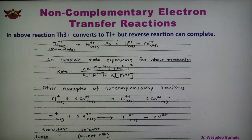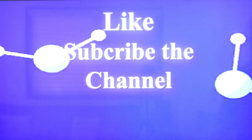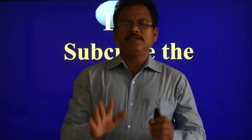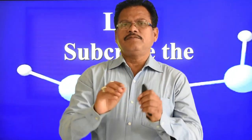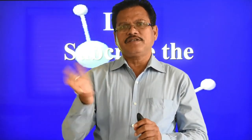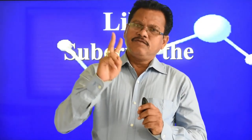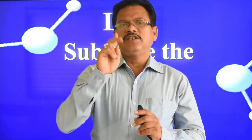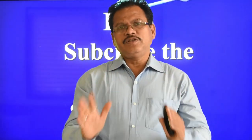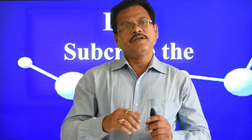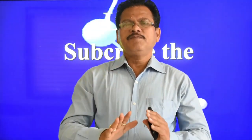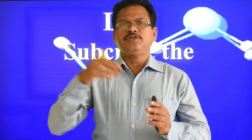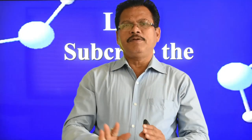In summary, we have seen the outer sphere reaction and five factors affecting it. We have also seen the two types of two-electron transfer reactions: complementary and non-complementary. In a previous part we also covered one-electron transfer reactions. Both complementary and non-complementary reactions are important topics in the reaction mechanism of transition metal complexes.